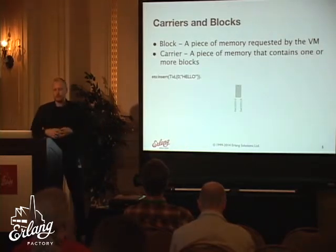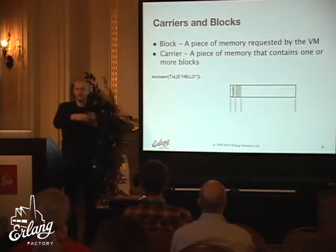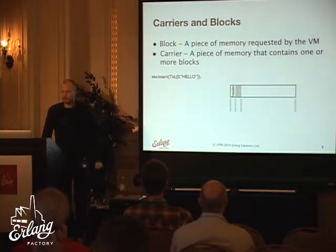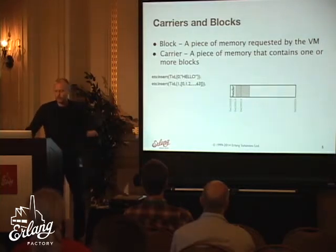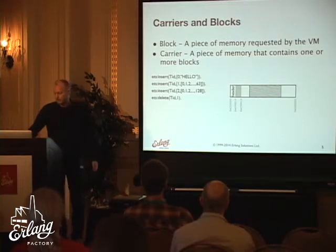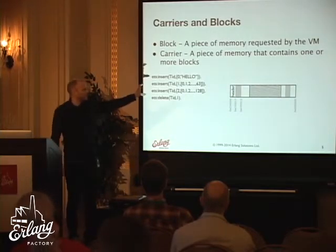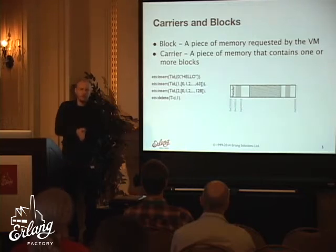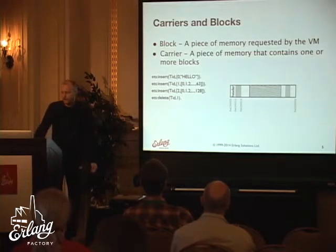A carrier is a container that holds one or more blocks. It has a header with type and settings, and blocks get placed inside it. As you continue doing operations — like on an ETS table — more data is placed in the carrier. When you delete something, you get fragmentation. In a normal Erlang emulator, carriers are aligned at an 18-bit limit, so about 256 kilobytes minimum. The amount of memory allocatable is controlled by many settings.